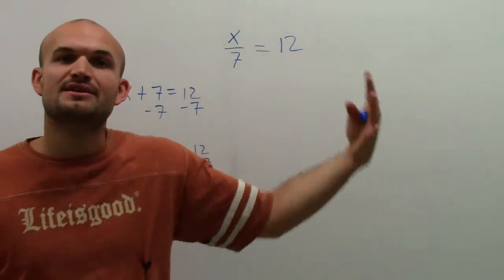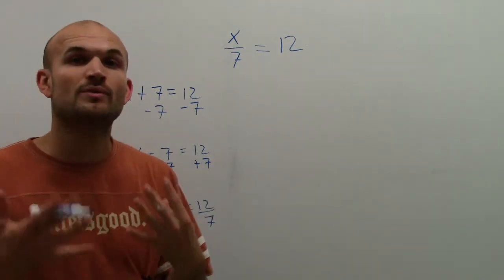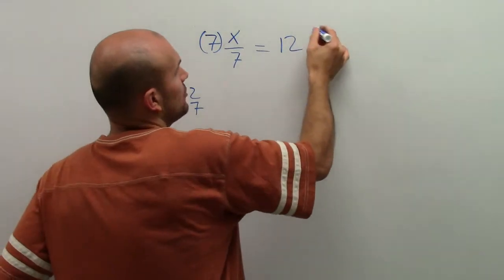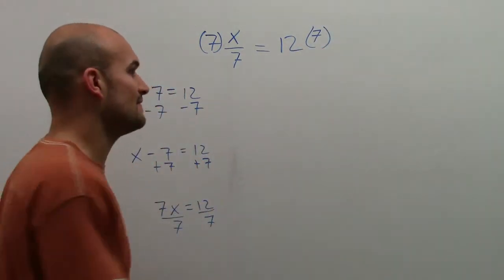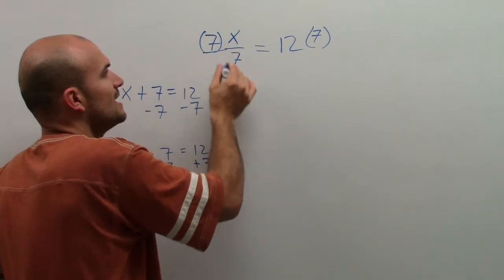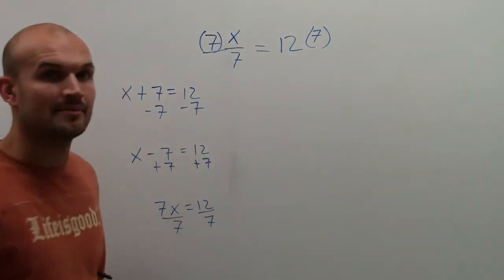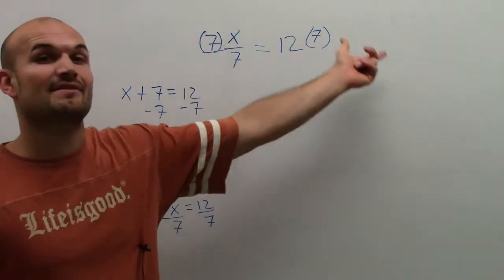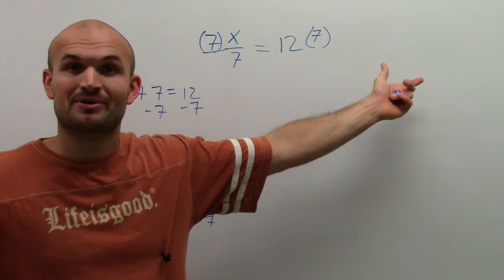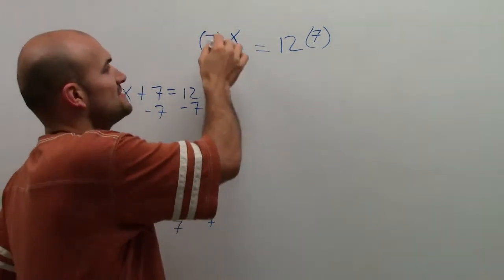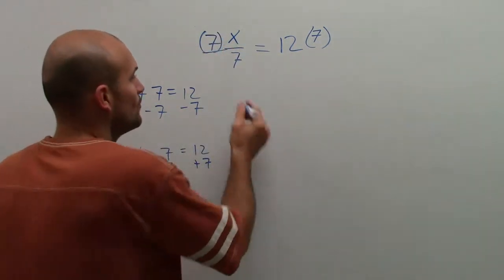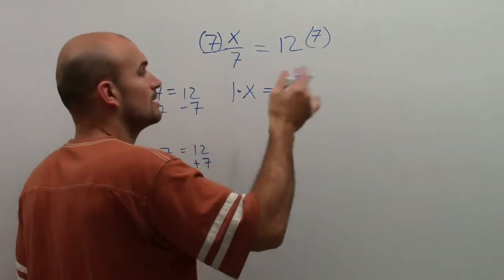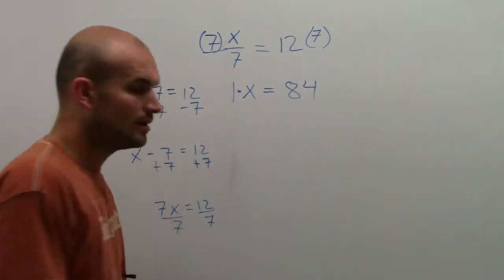x over 7 means we're using division, so to undo division we have to use multiplication. I'm going to multiply by 7 on both sides. When you multiply by 7, you produce a 7 as a numerator and a 7 in the denominator, so you have 7 divided by 7, which equals 1. So I have 1 times x, which equals 12 times 7, which equals 84.